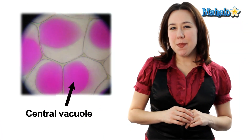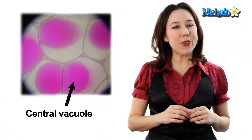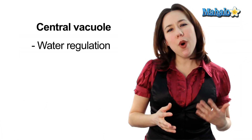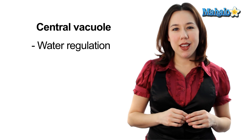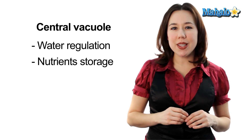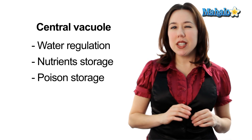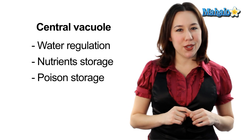Finally, plant cells have a central vacuole. The central vacuole is responsible for water regulation, storage of nutrients, and even sometimes storing poisons depending on what species you're talking about.